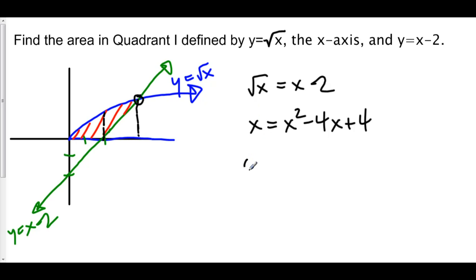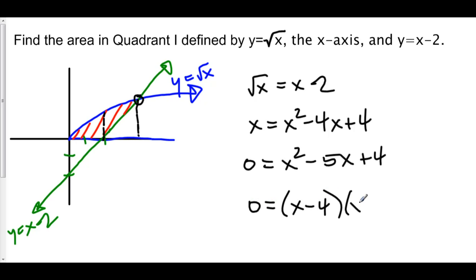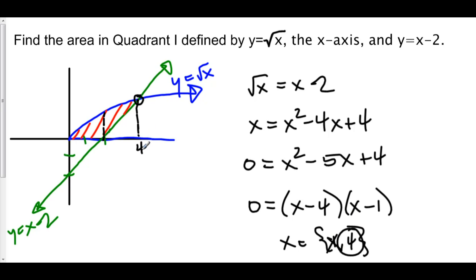Now we'll subtract x, yielding 0 on one side, and we have x squared minus 5x plus 4. This can be factored as (x minus 4)(x minus 1), so x is equal to both 1 and 4. We're not looking for 1 because it's to the left of 2. Plus, if we plug 1 back into the original function, you get 1 equals negative 1, which isn't a solution anyway. So x equals 4 is where these two lines intersect.